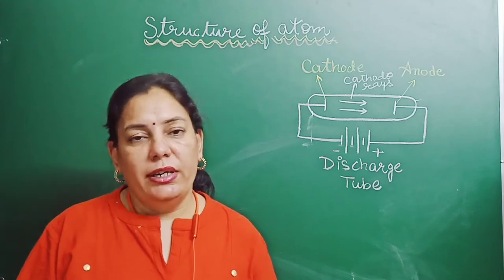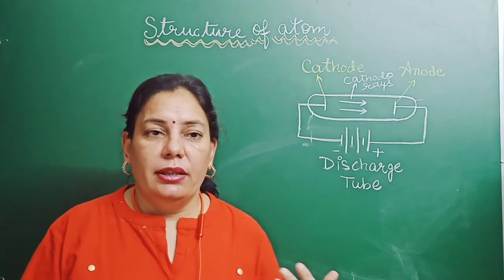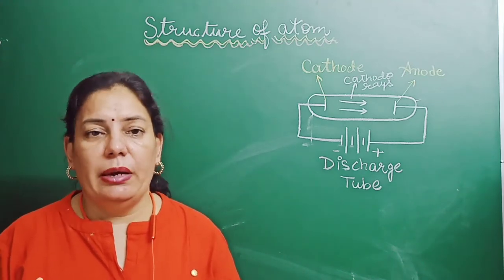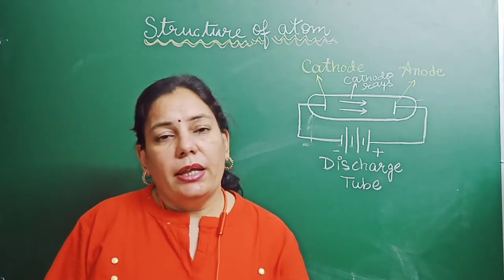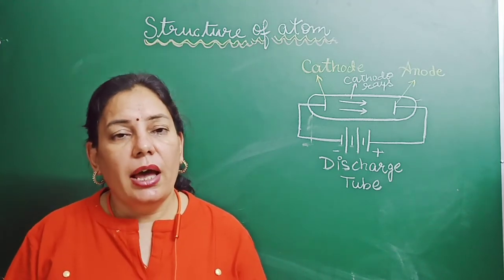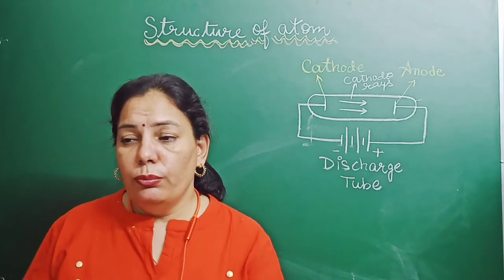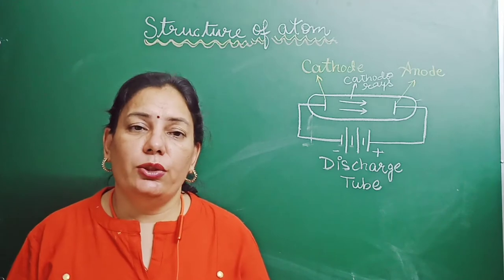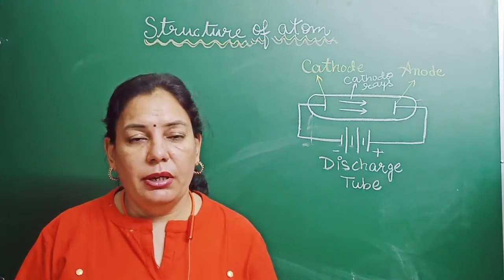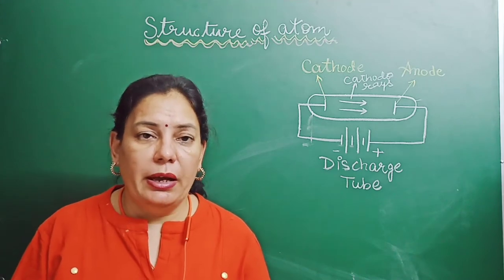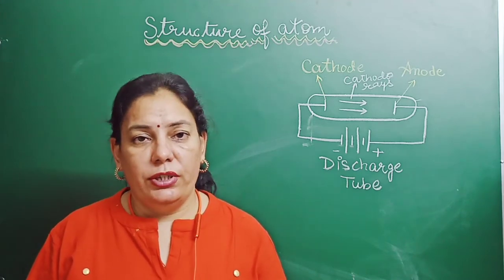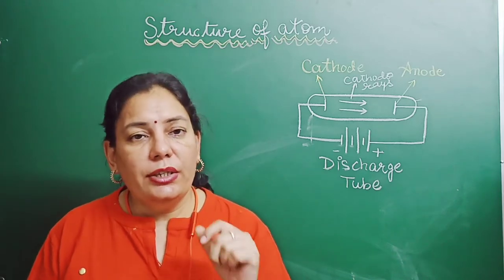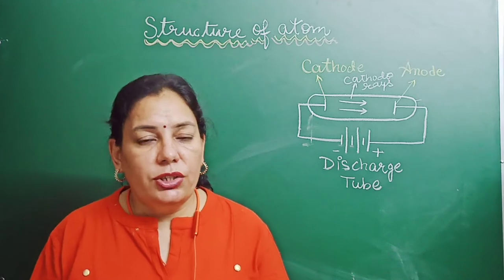But by the end of 19th century, subatomic particles were discovered. Subatomic particles means the discovery of electrons, protons and neutrons. The discovery of cathode rays helped to know more about these subatomic particles. First of all, we will study how the cathode rays were discovered and what was the experiment done by scientist Julius Plucker in 1859.